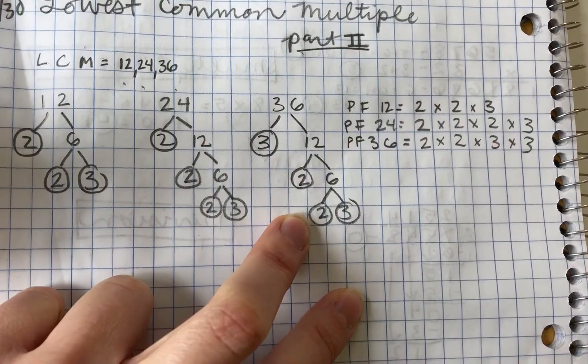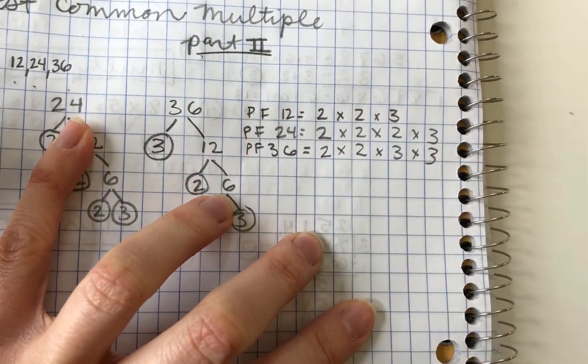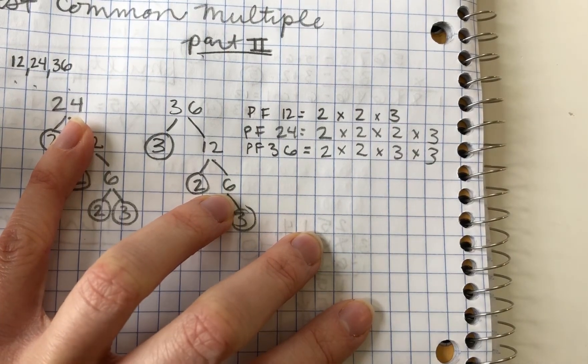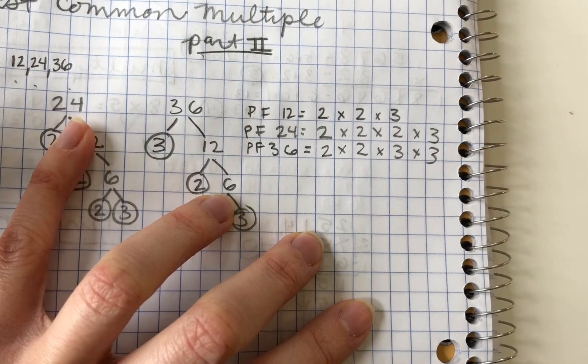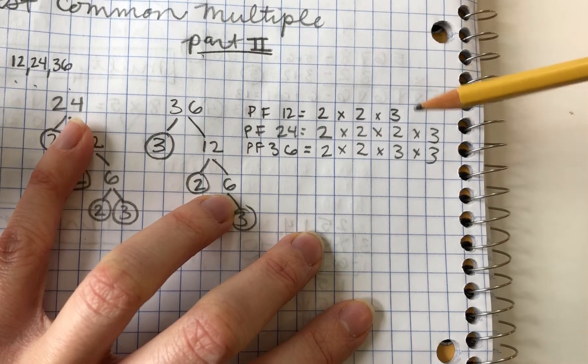All right. Now that we have this all written out, this is going to be what helps us find the lowest common multiple of these larger numbers. So what do these have in common? We see there's a lot of twos and threes.